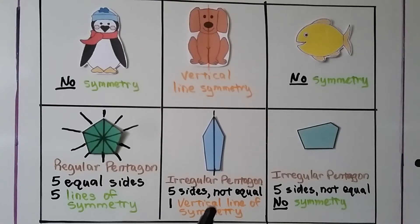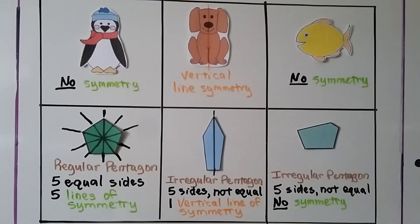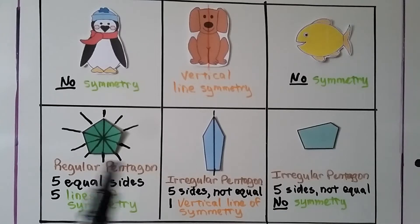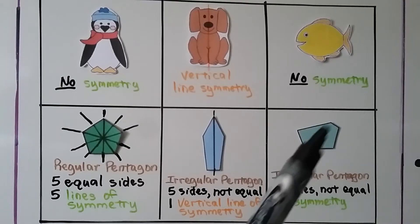This is also a pentagon, but because the sides are not all equal length, it's an irregular pentagon. It has five sides but they're not equal — it has one vertical line of symmetry. This polygon is also an irregular pentagon because the sides are not all the same length, and it has five sides but no symmetry. We can't draw a line anywhere through this shape to make two equal halves.